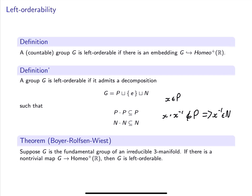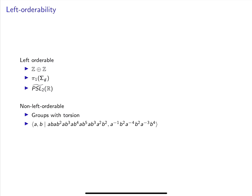The two definitions are equivalent for countable groups. I won't prove that for you right now. Here's a very useful theorem of Boyer, Rolfsen, and Wiest, which says that if we restrict to three manifold groups, we can drop the condition of faithfulness of the action on ℝ in the definition of left orderability.